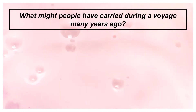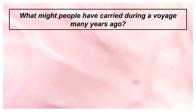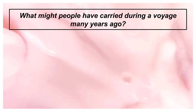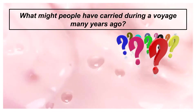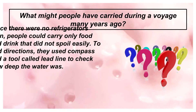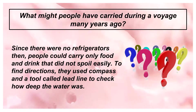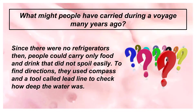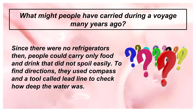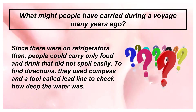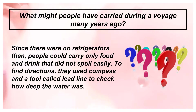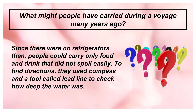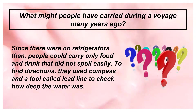During a ship voyage, what might people have carried many years ago? Since there were no refrigerators, people could carry only food and drink that did not spoil easily. To find directions, they used a compass and a tool called a lead line to check how deep the water was — meaning the depth of the ocean.